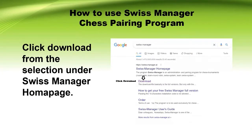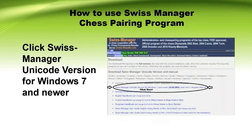Then you will see from the search results the download link under the Swiss Manager homepage. Then click the download. Next, you will see the Swiss Manager Unicode version for Windows 7 and newer. Click that.